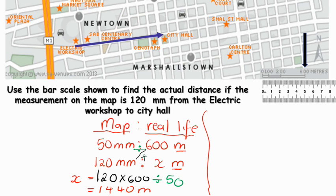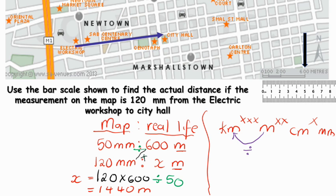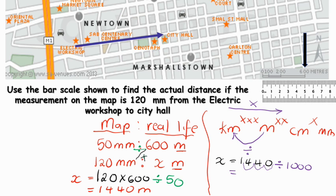So if they say you should write this in kilometers, then we need to go ahead and convert. The unit ladder goes: kilometers, meters, centimeters, and millimeters — three stars for 1000, two stars for 100, and one star for 10. We are going from meters to kilometers, so we are going to divide. When moving backwards towards the larger unit, we divide; moving forward like reading a sentence, we multiply. So X is equal to 1440 divided by 1000. When we divide by 1000, we move our comma three places, giving us 1.44 kilometers.